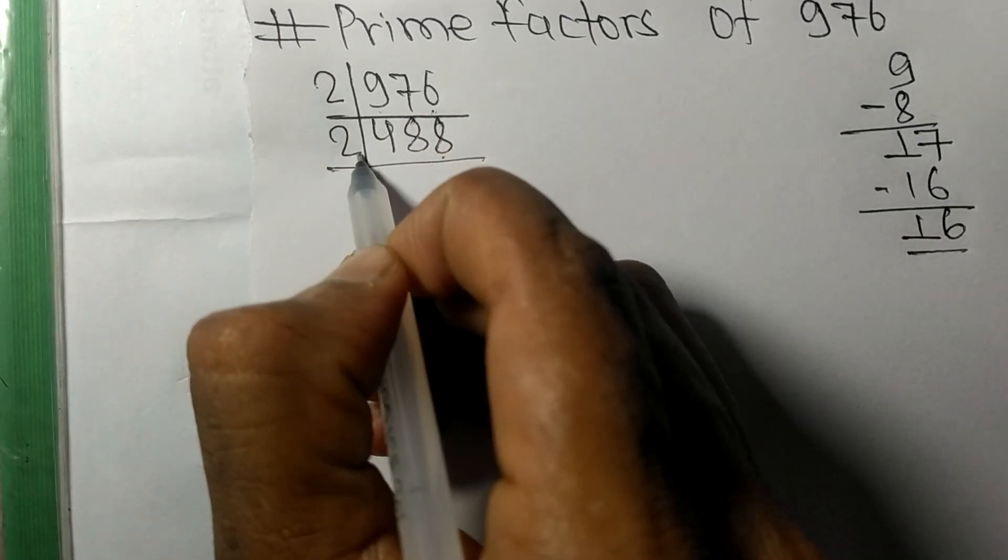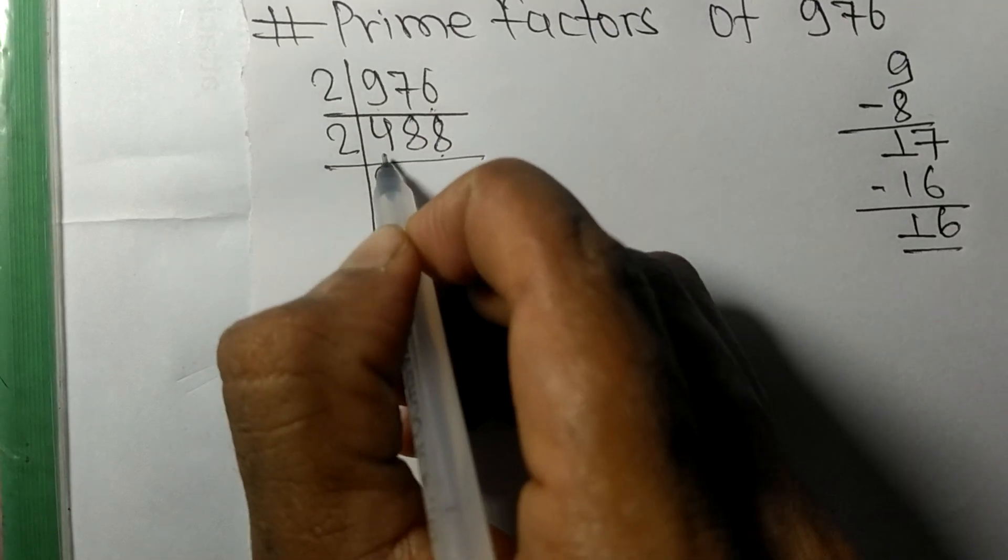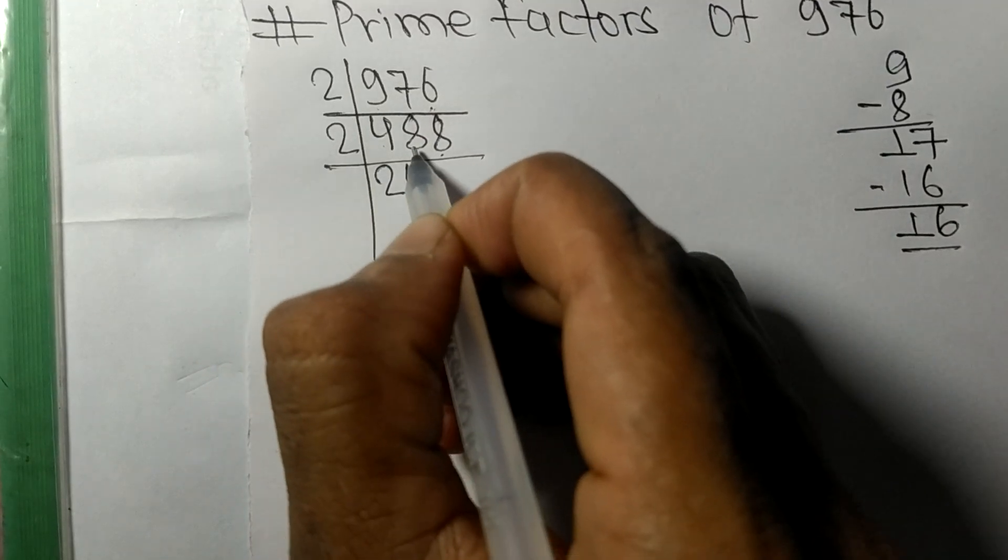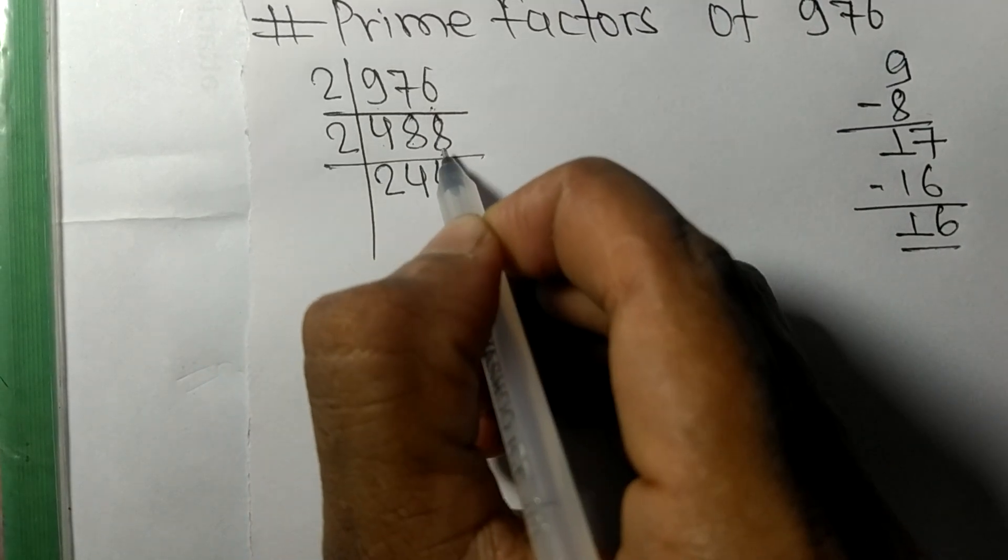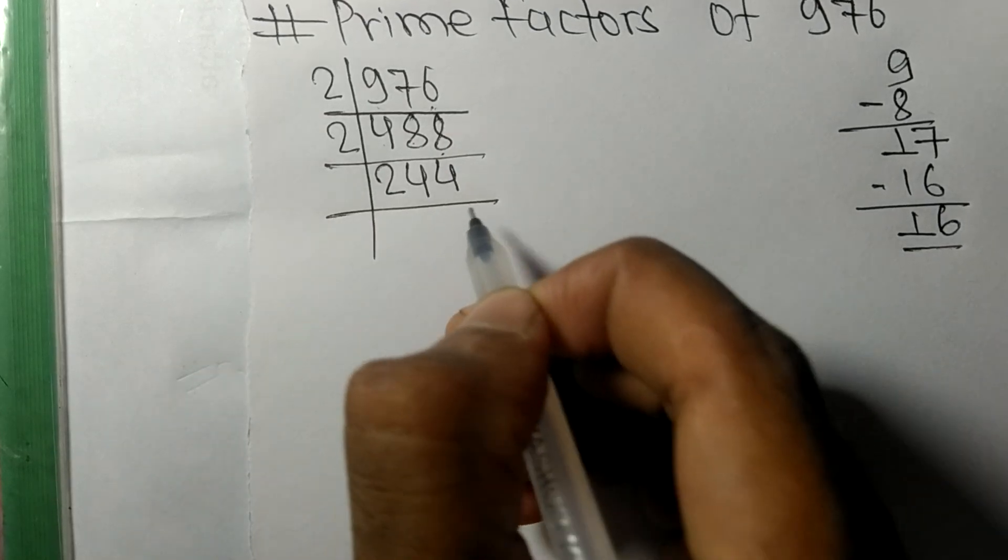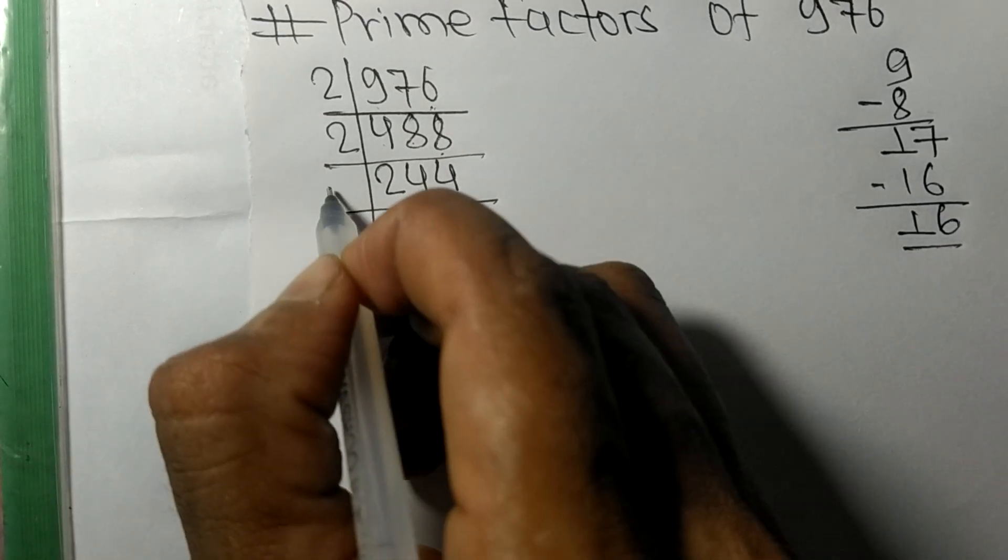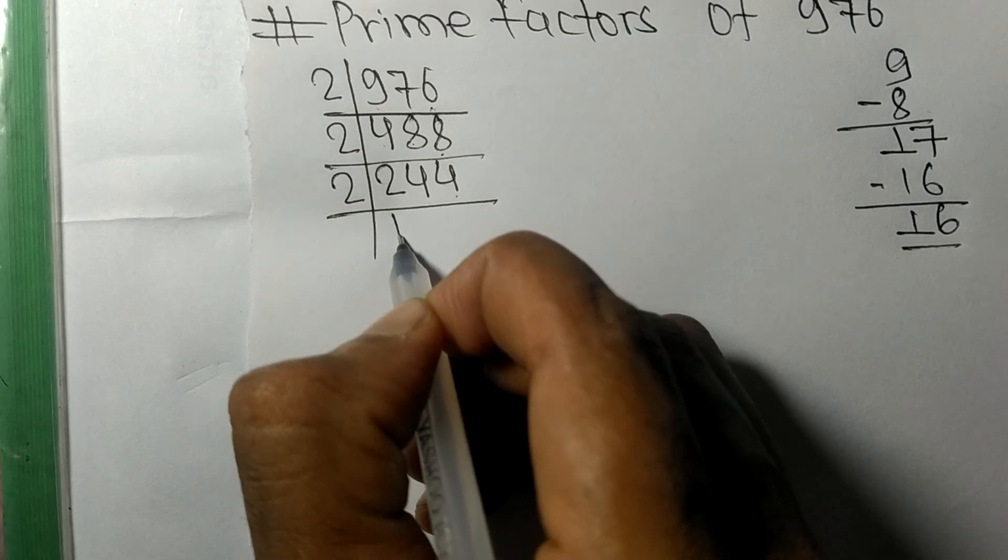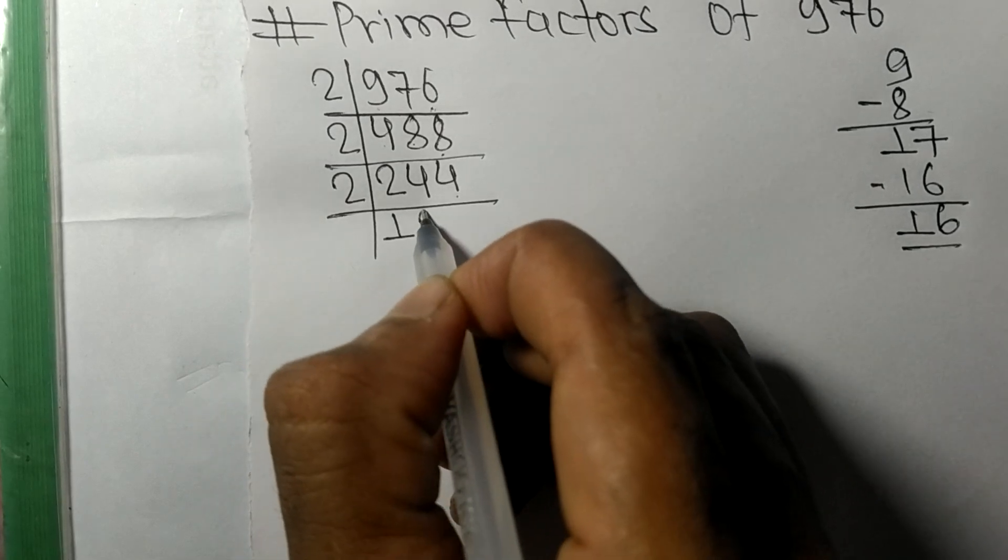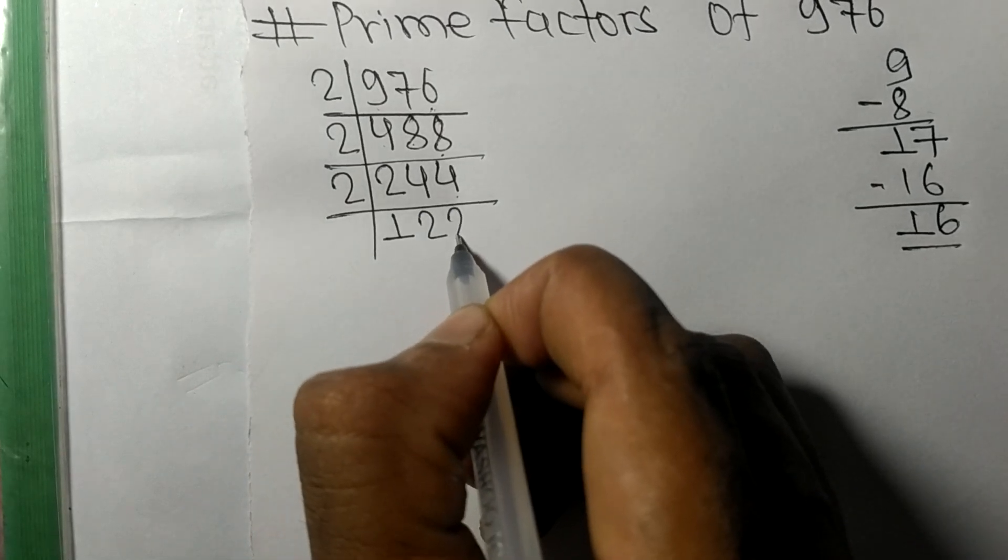2 times 2 means 4. 2 times 4 means 8. 2 times 4 means 8. Even number 4 at last, so divisible by 2. 2 times 1 means 2. 2 times 2 means 4. 2 times 2 means 4.